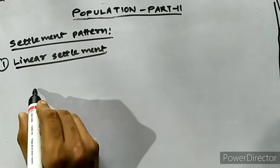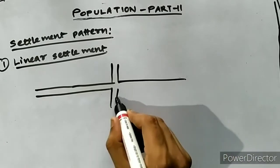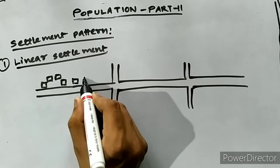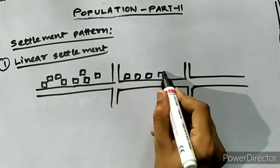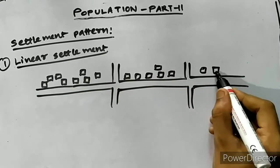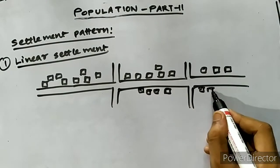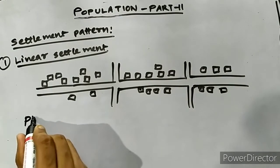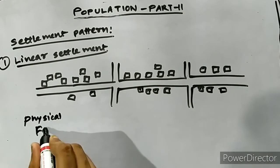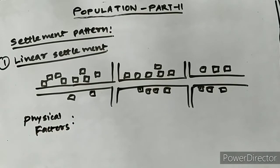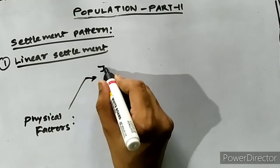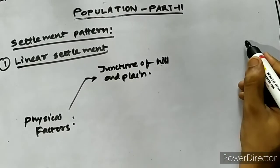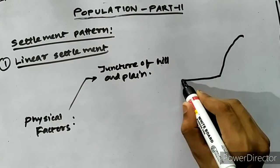The first common pattern is the linear settlement pattern. This is defined as the pattern of settlement in which the homesteads are laid out one after another in one or two parallel rows. This is shown clearly in diagrams — it is simply a linear arrangement.